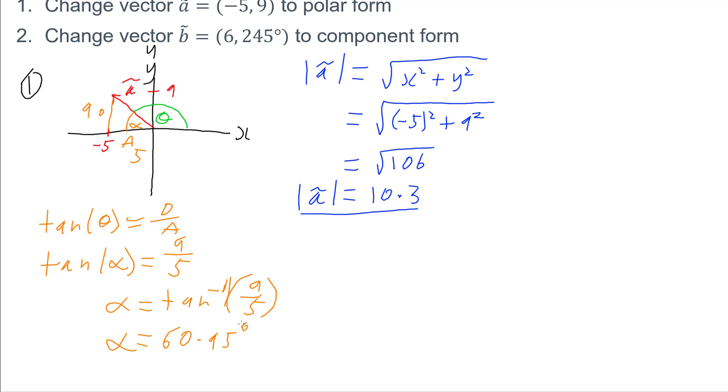And so I can write my vector A now in polar form as 10.3, 60.95 degrees.